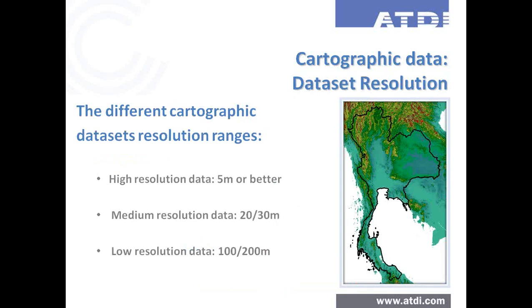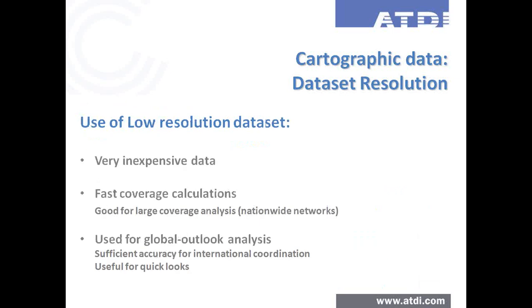There are several categories of cartographic data. High resolution data in the range of five meters or better is typically used for dense urban areas and in-depth analysis. Medium resolution data in the range of 20 to 50 meters is a good fit for broadcast analysis on wide areas. For nationwide analysis, low resolution data such as 100 to 200 meters can be sufficient. The main advantage of low resolution data is that it is inexpensive, allows very fast computation times, and is suitable for global, wide area, and nationwide analysis.